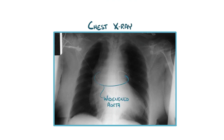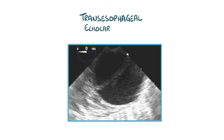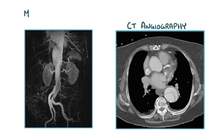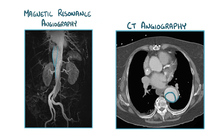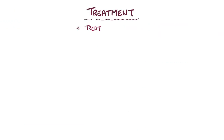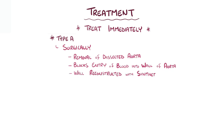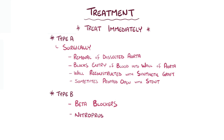More sensitive imaging techniques that are commonly used include a transesophageal echocardiogram, where an ultrasound probe is passed through the esophagus to obtain a clear picture of the aorta. There's also CT angiography and magnetic resonance angiography, both of which look closely at the blood vessels. An aortic dissection needs to be treated immediately. Type A aortic dissections are treated surgically, where a surgeon removes as much of the dissected aorta as possible and blocks the entry of blood into the wall of the aorta. The aortic wall is then reconstructed with a synthetic graft, sometimes propped open with a wire mesh stent. Type B aortic dissections are treated with beta blockers and nitroprusside.